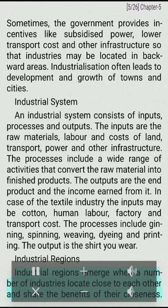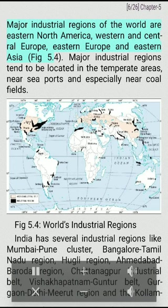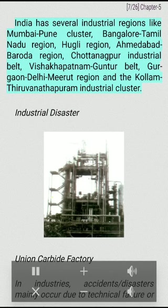Industrial regions emerge when a number of industries locate close to each other and share the benefits of their closeness. Major industrial regions of the world are Eastern North America, Western and Central Europe, Eastern Europe, and Eastern Asia. Major industrial regions tend to be located in temperate areas, near seaports, and especially near coal fields. India has several industrial regions like Mumbai-Pune Cluster, Bangalore-Tamil Nadu Region, Hugli Region, Ahmedabad-Baroda Region, Chhattisgarh Industrial Belt, Vishakhapatnam-Guntur Belt, Gurgaon-Meerut Region, and the Kollam-Thiruvananthapuram Industrial Cluster.